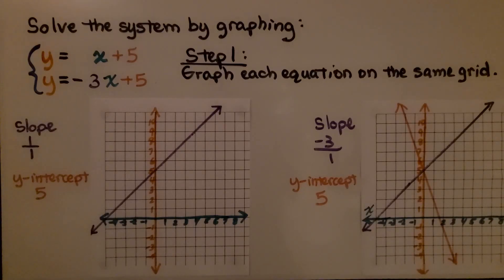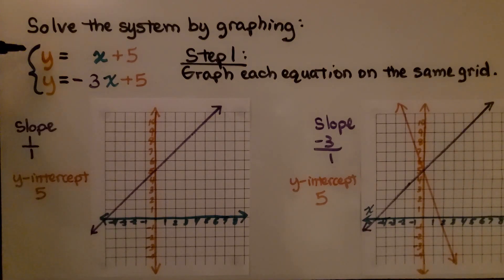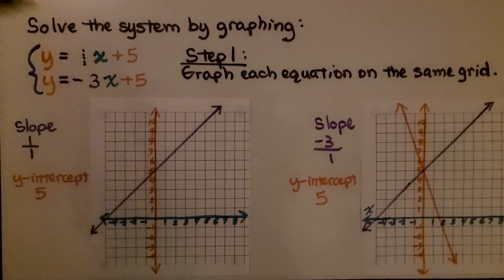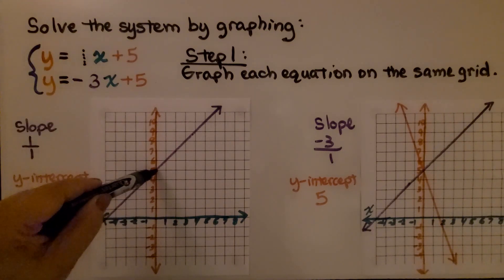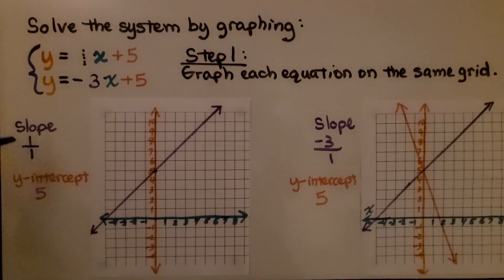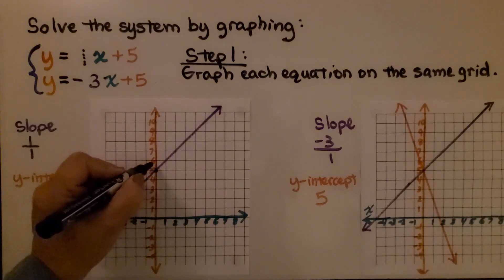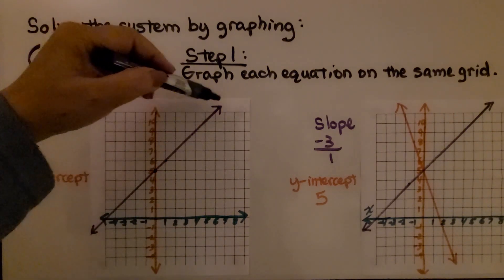Here we're told to solve this system by graphing, so we graph each equation on the same grid as the first step. Looking at y = x + 5, the y-intercept is positive 5, and we have a slope of 1 — rise over run, 1 over 1. We go up 1 and over 1, then take a straight edge and draw the line.